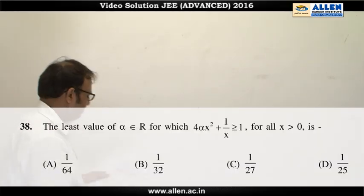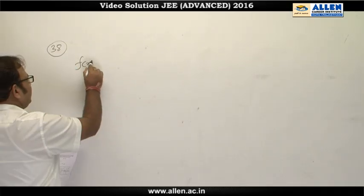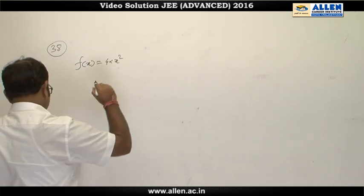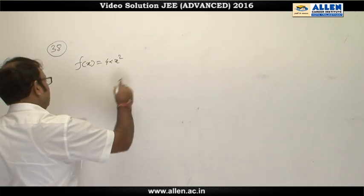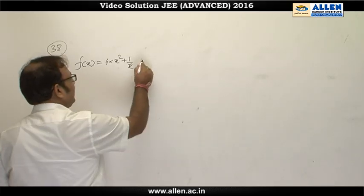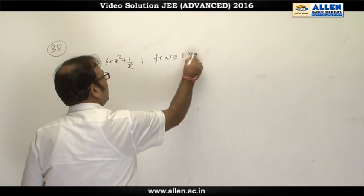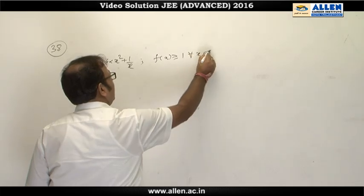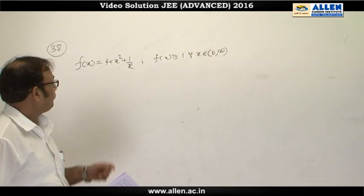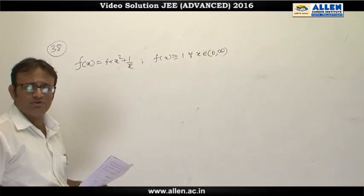Question number 38. You are given a function f(x) = 4αx² + 1/x, and it is also given that f(x) ≥ 1 for all x belonging to the open interval (0, ∞). We have to find the least value of α satisfying this condition.